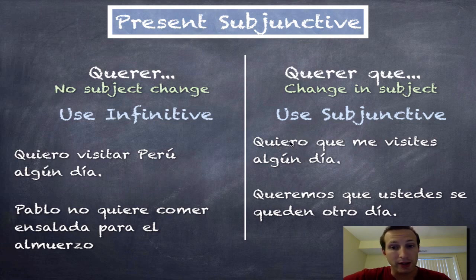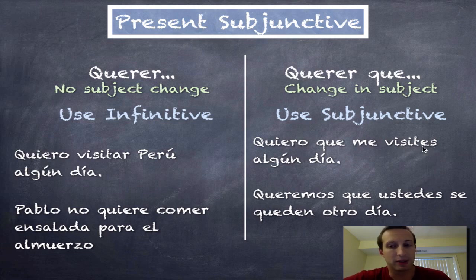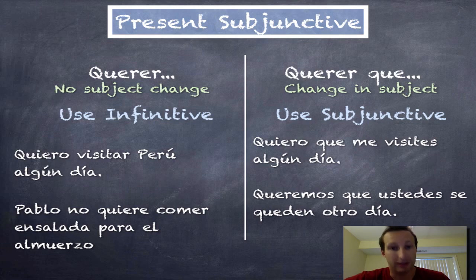'Yo quiero' — in that first part, I'm the subject. 'Que me visites' — in that second part, you're the subject of visitar. So it means 'I want you to visit me.' And notice that visitar would normally have an -AR ending in the indicative, but since it's subjunctive, it becomes -ES: 'visites.' So: 'quiero que me visites algún día,' using the subjunctive.